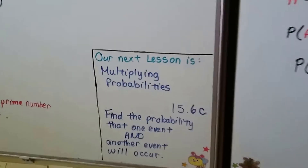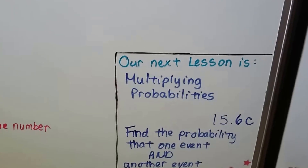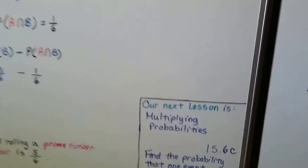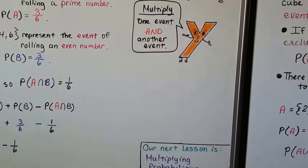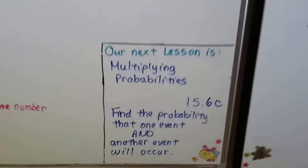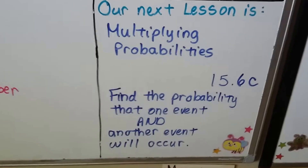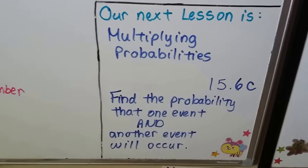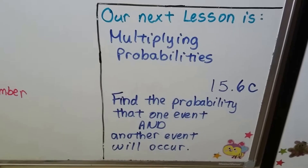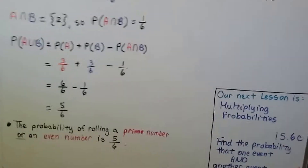Our next lesson is multiplying probabilities — lesson 15.6C. We're going to find the probability that one event AND another event will occur, like flipping a coin and rolling a die.